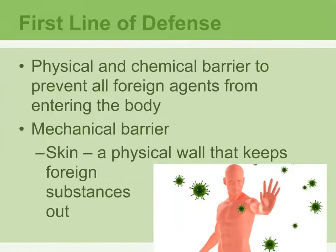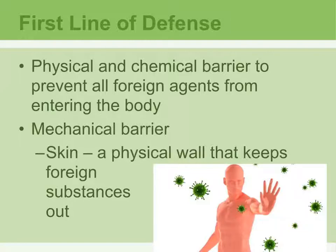The purpose of the first line of defense is to act as a physical or chemical barrier that prevents pathogens or foreign substances from getting into the body where they can cause damage. Mechanical barriers are examples of things that prevent pathogens from getting in. The number one mechanical barrier is your skin, which creates a physical wall preventing viruses, bacteria, or fungi from entering. That's why having a cut on your skin can be dangerous — it creates an opening where pathogens can get in.